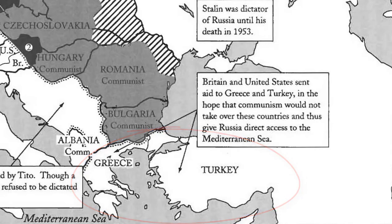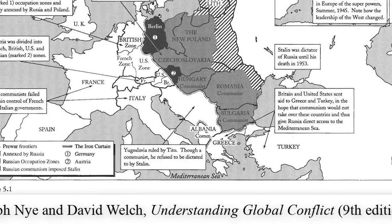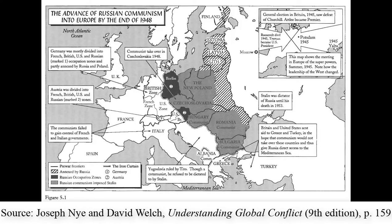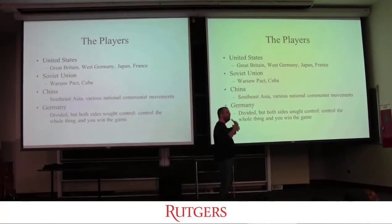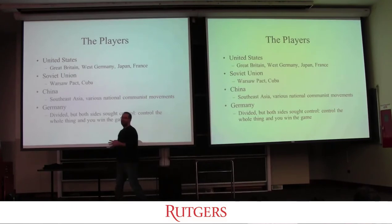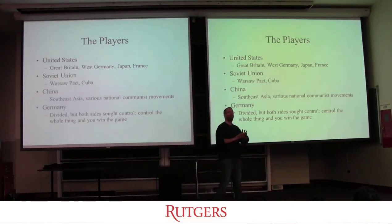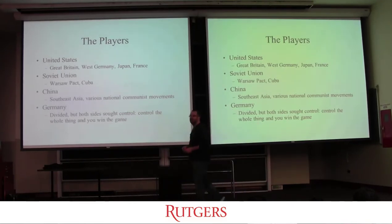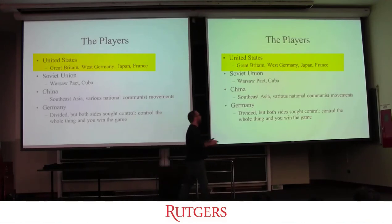It was the United States that finally got Stalin to relent on supporting communist movements in Greece and Turkey, keeping the Mediterranean and access to the Black Sea open to the West. Looking at who the major players were within this framework, there are really four main players with a whole bunch of supporting characters. The first major player is the United States and its allies — in order of importance: Great Britain, West Germany, Japan, and France.